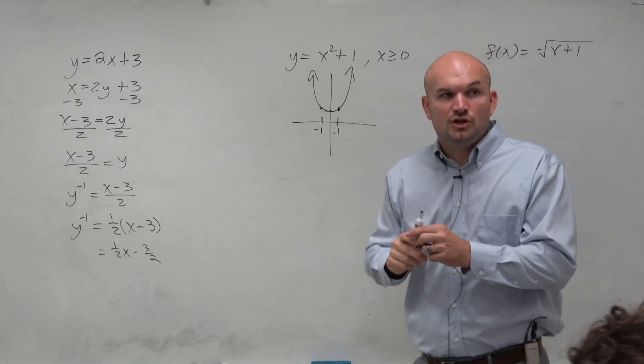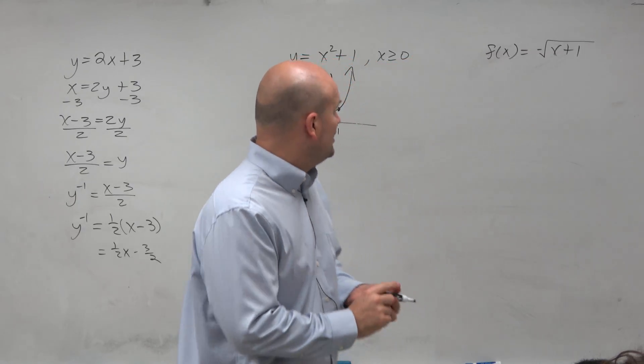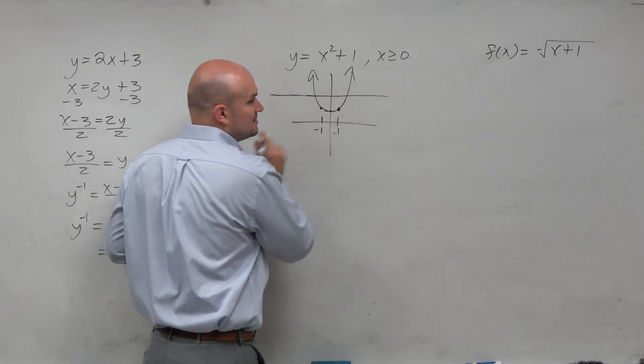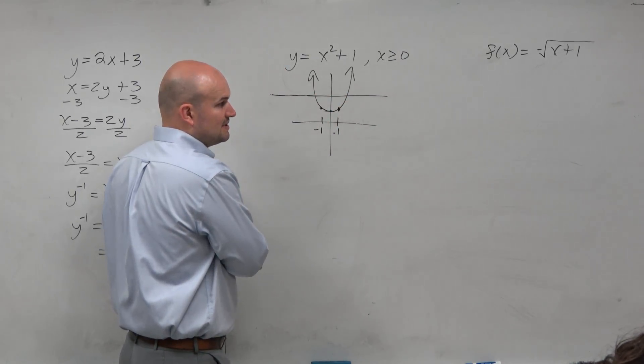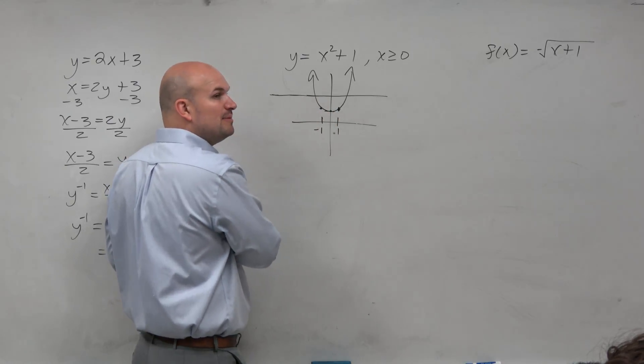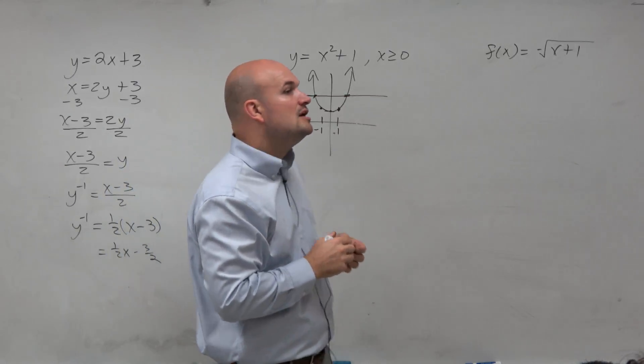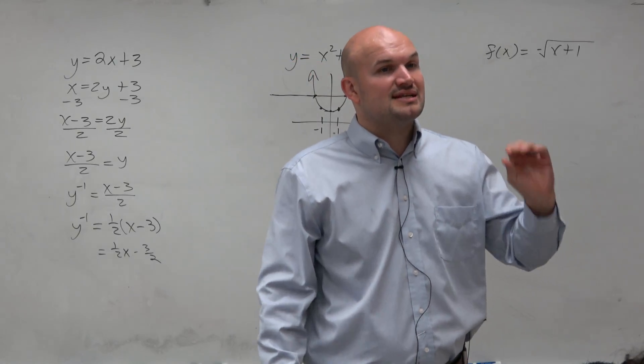Another way to determine if something is 1 to 1 is to use the horizontal line test. So something is 1 to 1 if it passes the horizontal line test. This does not pass the horizontal line test. So therefore, the inverse is not a function.